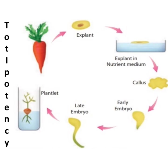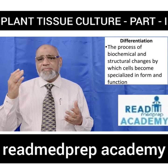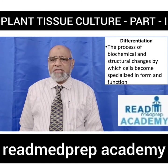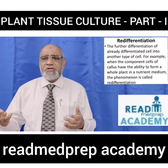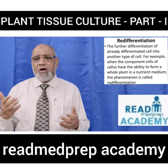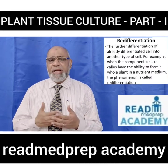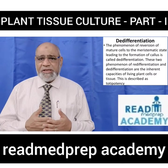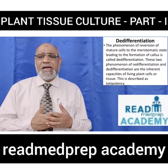Differentiation is the process of biochemical and structural changes by which cells become specialized in form and function. Redifferentiation is the further differentiation of an already differentiated cell into another type — for example, when callus cells form a whole plant in nutrient medium. Dedifferentiation is the reversion of mature cells to the meristematic state, leading to the formation of callus.